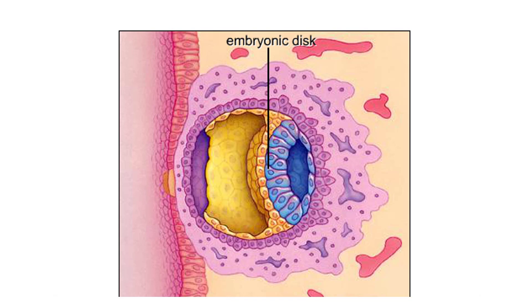Membranes start to form around the embryonic disc. The amniotic cavity will fill with fluid and cradle the embryo. The yolk sac will function in blood cell formation.